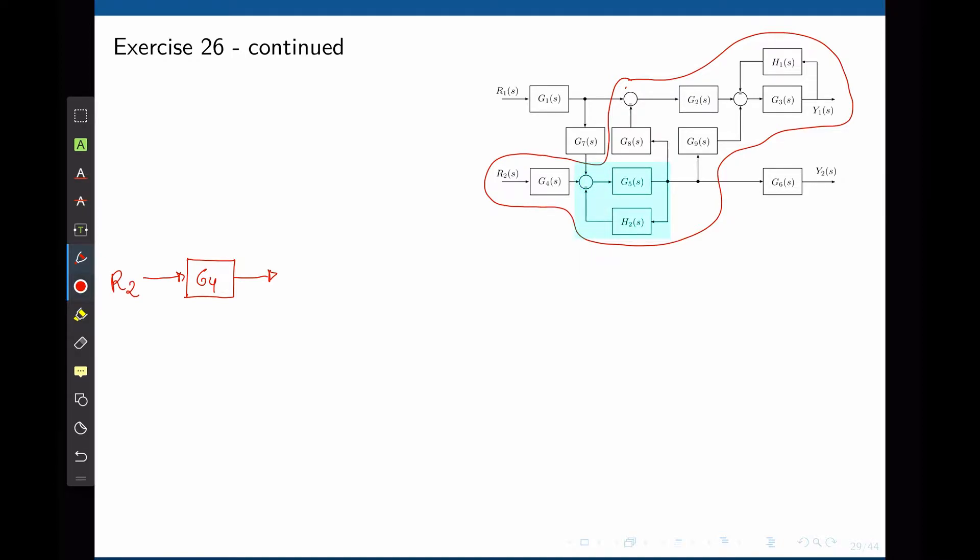This is a simple feedback loop. It can be simplified as G5 over 1 plus G5 times H2.